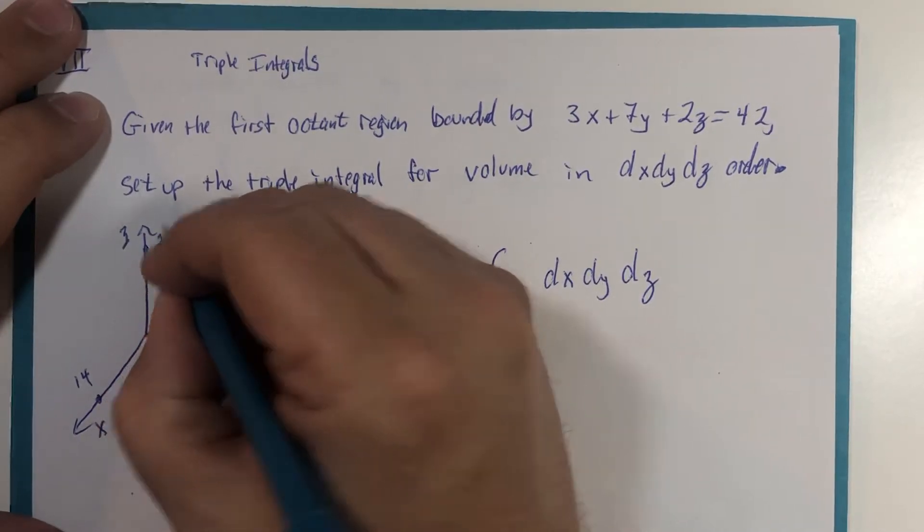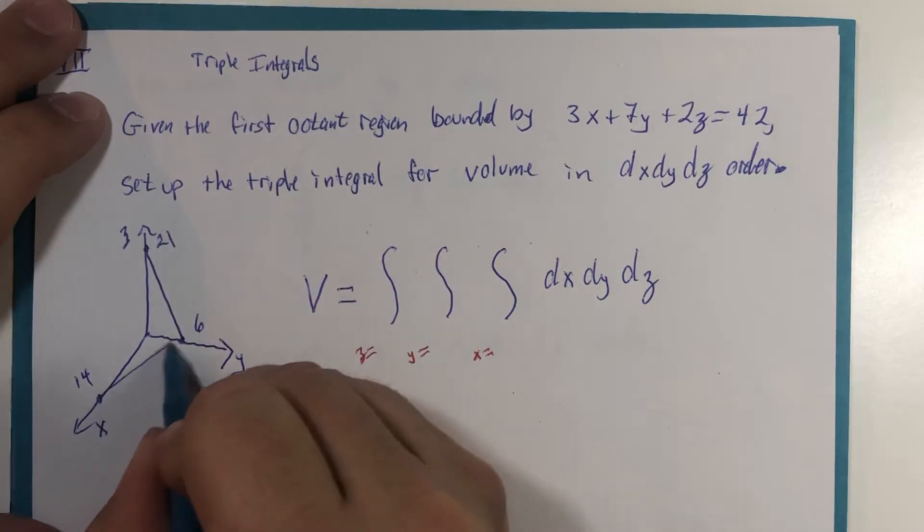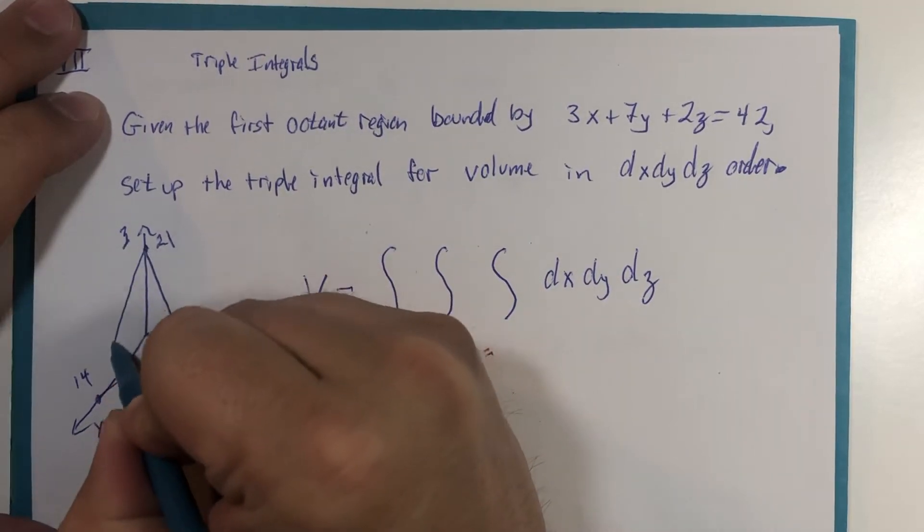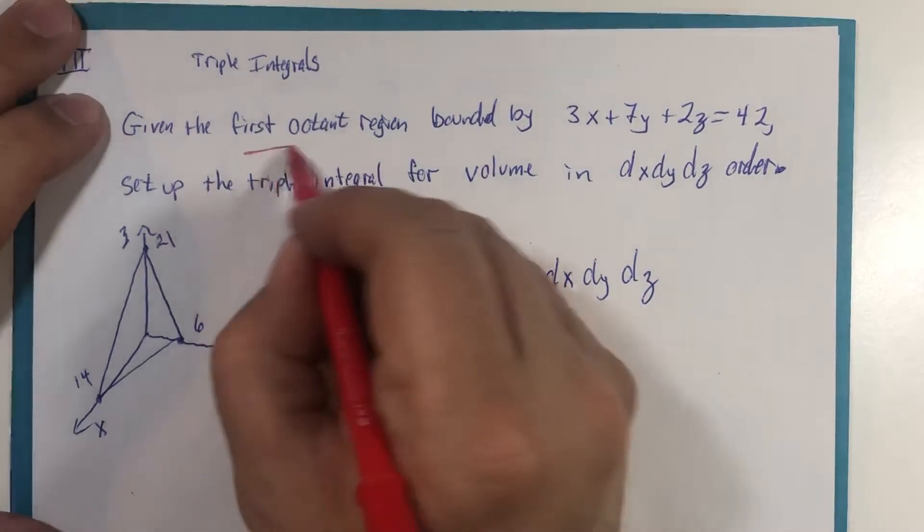So yet again, my picture, my graph here is not to scale. But that triangle represents the portion of the plane that's in the first octant.